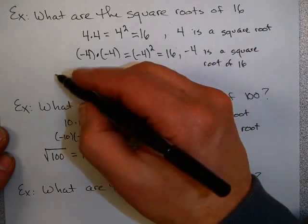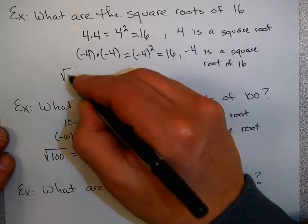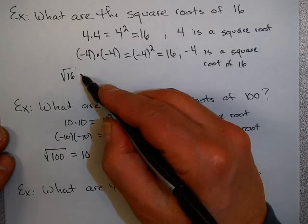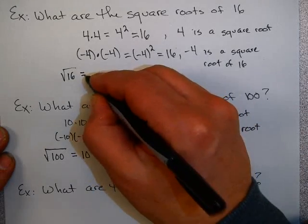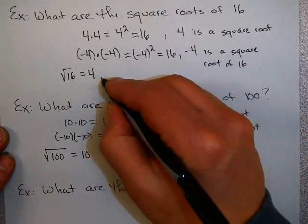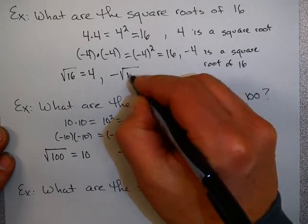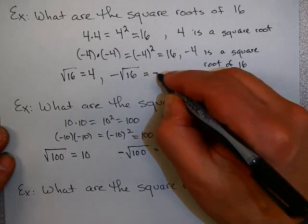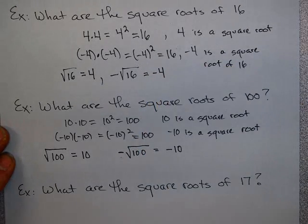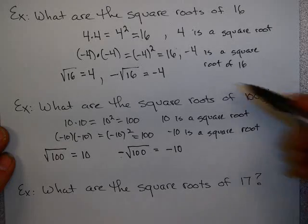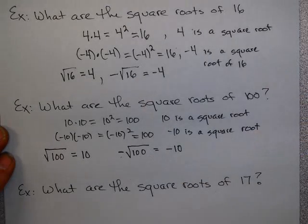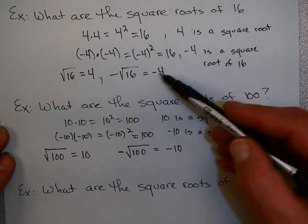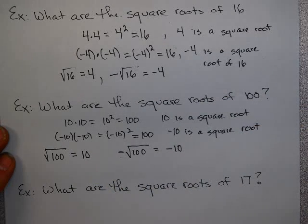Going up to the previous problem, this right here means what is the principal square root, or what positive number times itself is 16, and that is 4. And this means what negative number times itself is positive 16, and that is negative 4. Now, these two numbers, 16 and 100, were special, because there were whole numbers or integers that, when multiplied by themselves, equal 16 or equal 100.